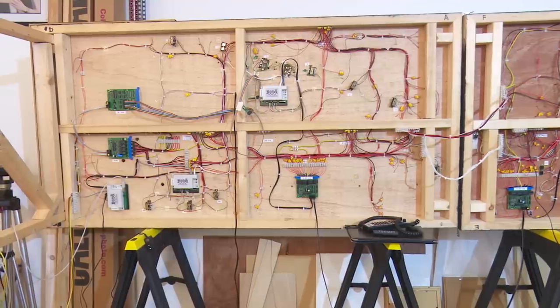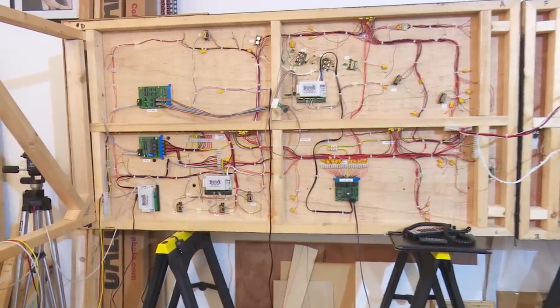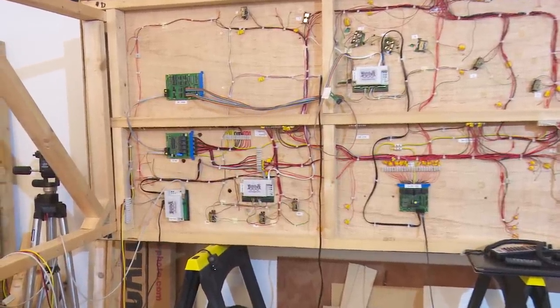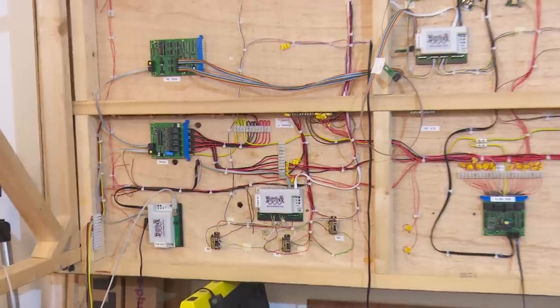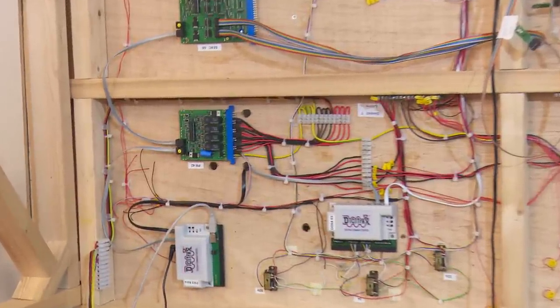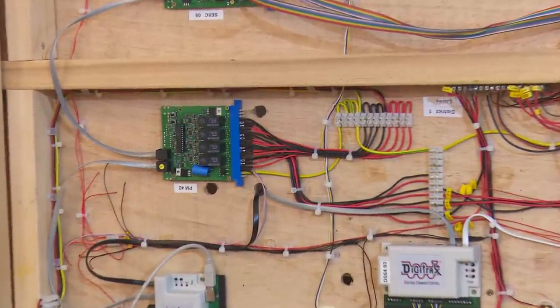I mentioned earlier the PM42 was a device that was used to break down the power feed for the whole layout into four separate sections although I only use three of them.